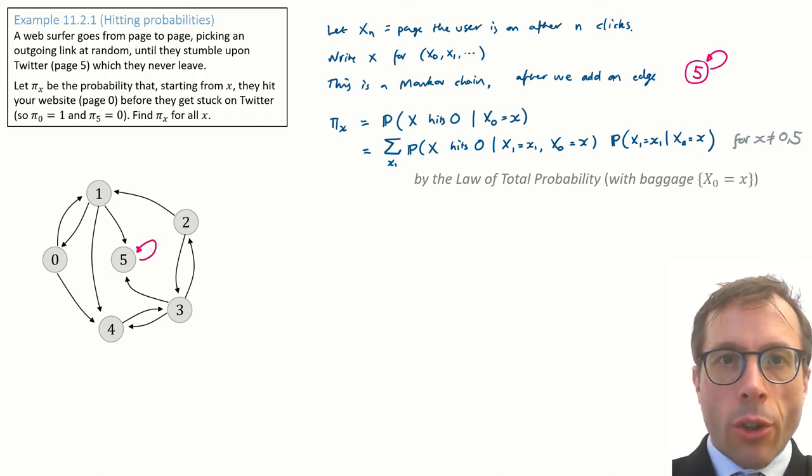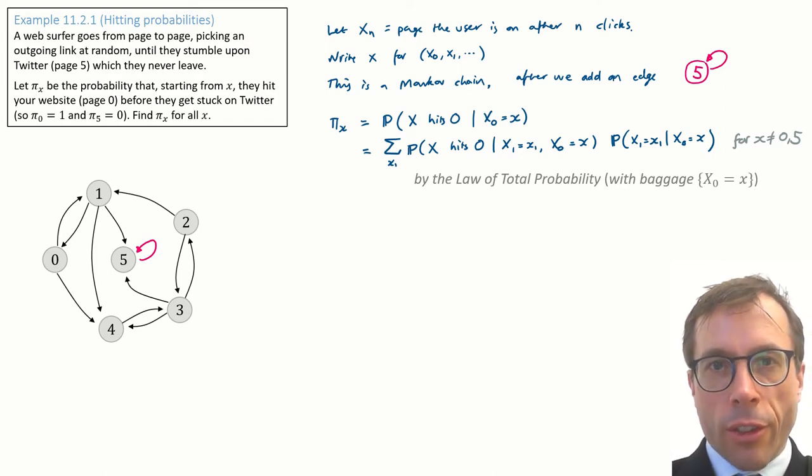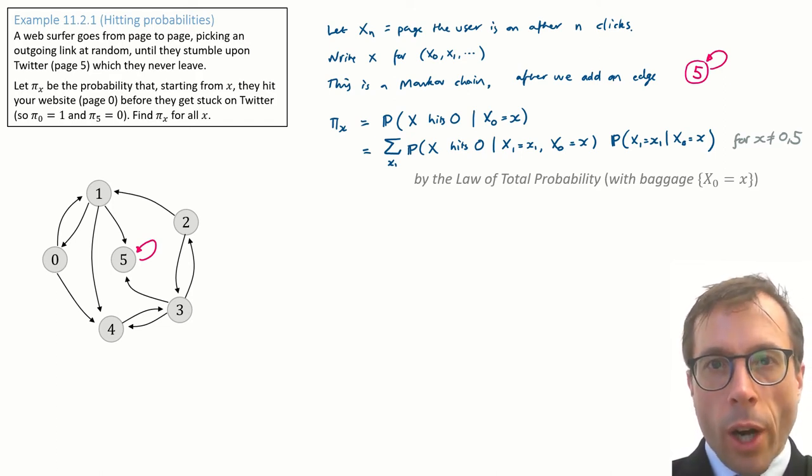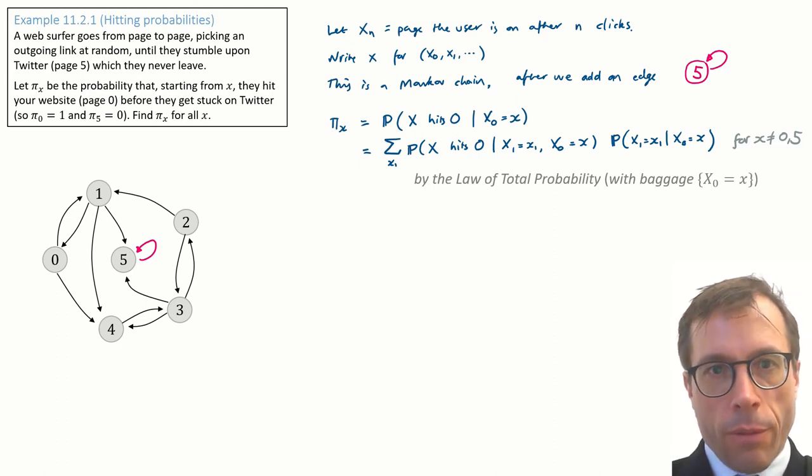Now this equation holds for all states x except for 0 and 5, where I already know the answer: pi sub 0 is 1 and pi sub 5 is 0.